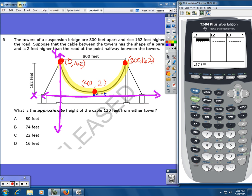So my X values are 0, 400, and 800. My Y values that match up are 162, 2, and 162.